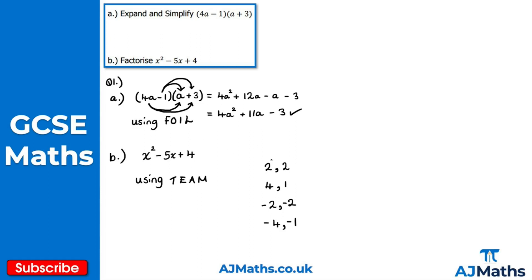Testing: 2 times 2 is 4, but 2 plus 2 is 4, not minus 5 — not this pair. 4 times 1 is 4, but 4 plus 1 is 5 not minus 5 — not this pair. Minus 2 times minus 2 is positive 4, but minus 2 plus minus 2 is minus 4 — not this pair. Minus 4 times minus 1 is positive 4, and minus 4 plus minus 1 is minus 5 — that's the correct pair.